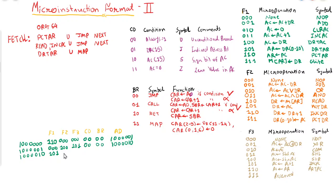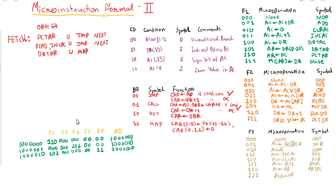DR2AR belongs to field 1 with value 1 0 1. There is no operation for field 2 and field 3. The condition is unconditional. For branch it is MAP, so the value is 1 1. In case of MAP, the address specified in the address field is not considered — instead, the opcode address is directly mapped.